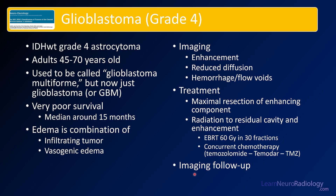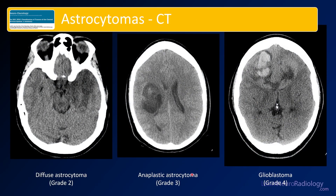Here's a summary slide of astrocytomas. On the left you have the diffuse astrocytoma — a low-density lesion with not a lot of enhancement. In the middle, the anaplastic astrocytoma, an intermediate-grade lesion. And on the right, the uglier-looking lesion with more mass effect, gross hemorrhage within, and that's the highest grade — the glioblastoma, or grade 4 astrocytoma.